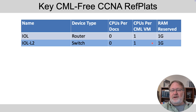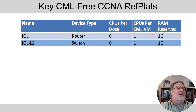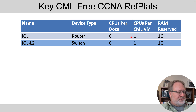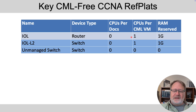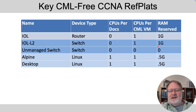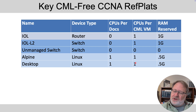Worst case scenario: if you start a router using one CPU and one gig of RAM, you can only run five. Running five nodes means five CPUs and five gig — that's the most you'll consume with network devices running in CML. So if you've assigned your VM the minimum of eight CPUs and eight gig of RAM, you should have enough to go around. The unmanaged switch, per both docs and software, doesn't claim any CPUs or RAM when started. There are also four Linux images — the two most likely you'll use are Alpine and Desktop, each using one CPU but only half a gig of RAM.